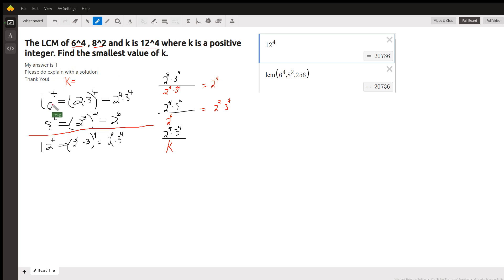So, 6 to the 4th is the same as 2 times 3 to the 4th, which is 2 to the 4th, 3 to the 4th.